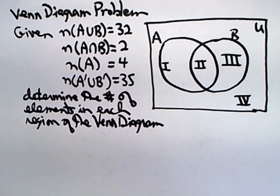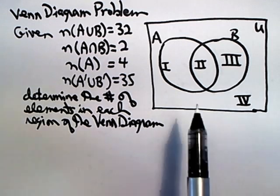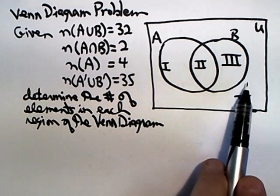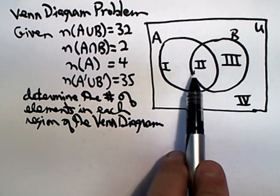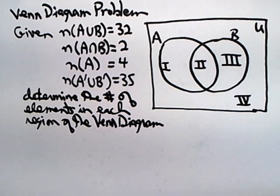In this problem, we're given some information, and we want to use that information to find the number of elements in each of these labeled regions, labeled with Roman numerals 1 through 4.